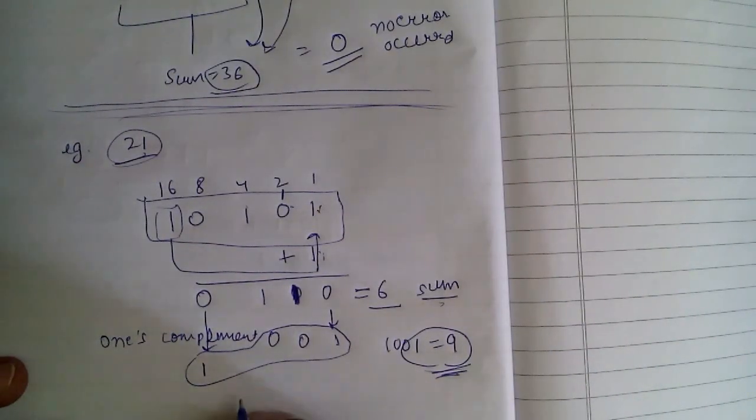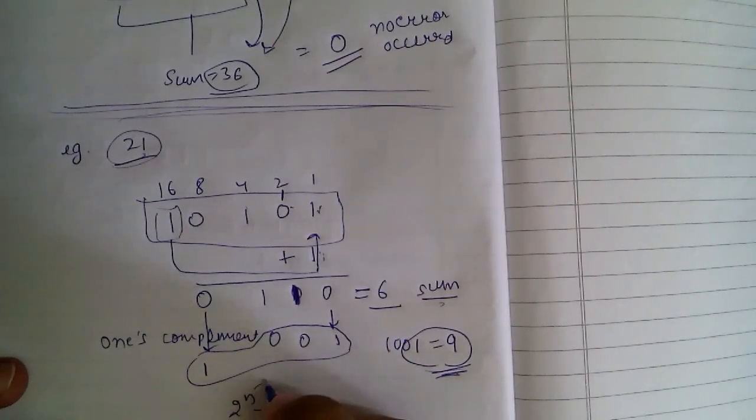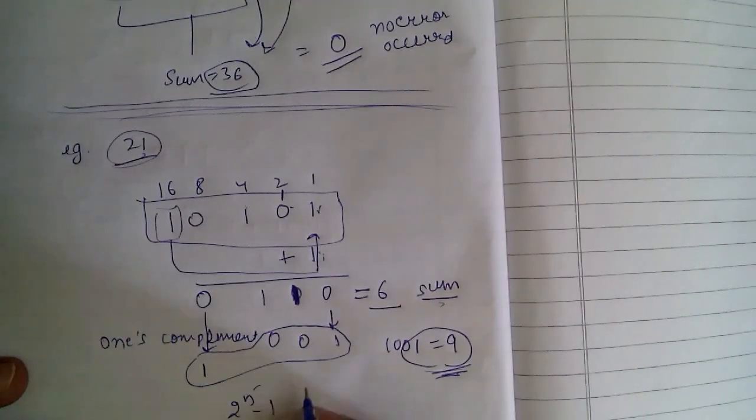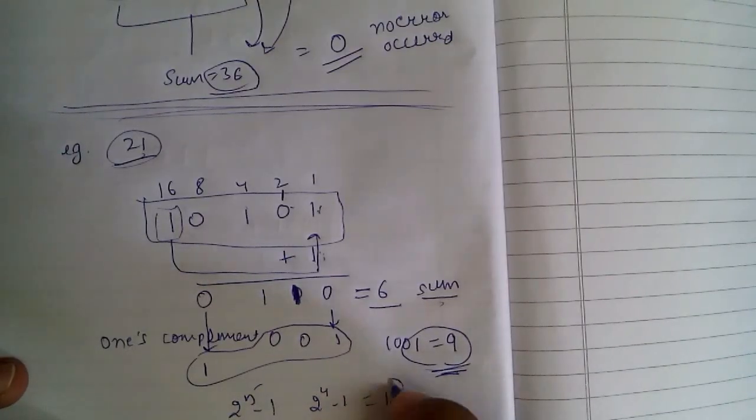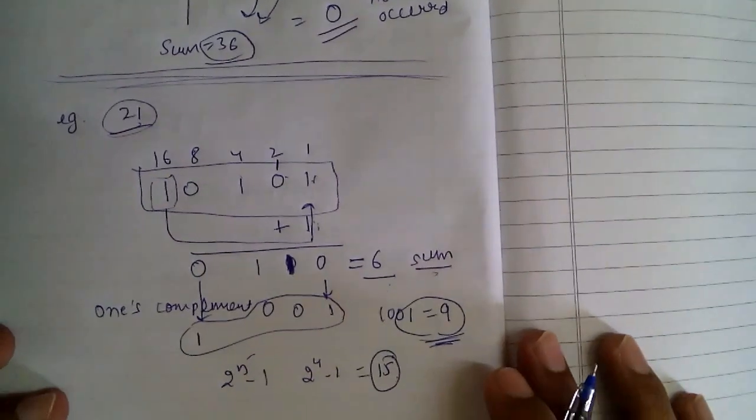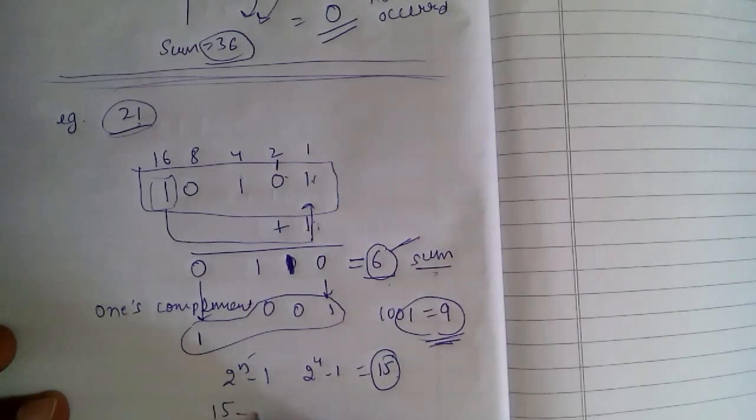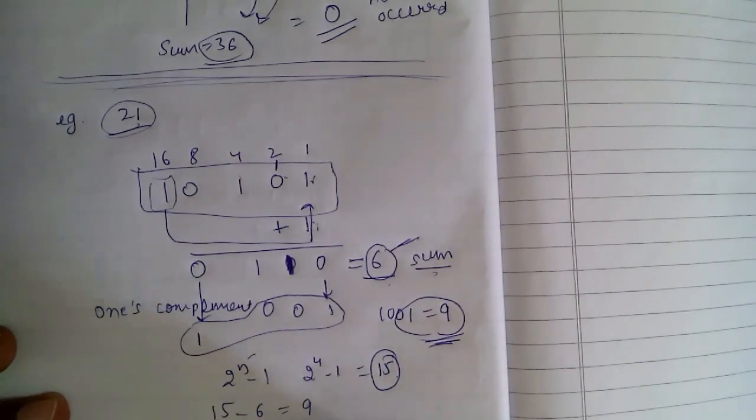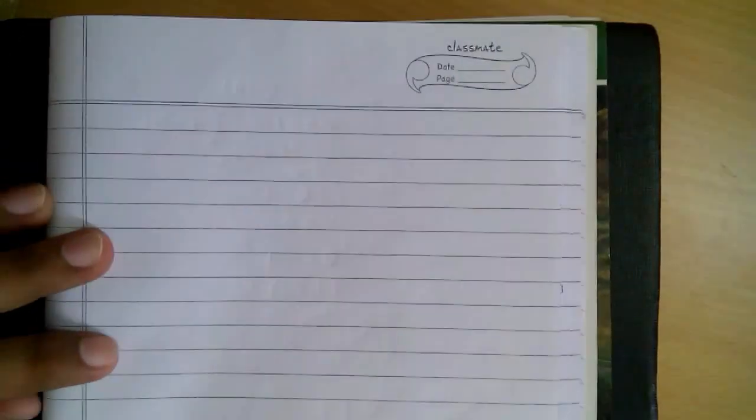Another simple method to obtain the complement is 2 raised to n minus 1, where n is the number of bits we are using for representation. So 2 raised to 4 minus 1 equals 15. Then subtract the number you want to complement. We want the complement of 6, so 15 minus 6 equals 9. This way we can also get the 1's complement.